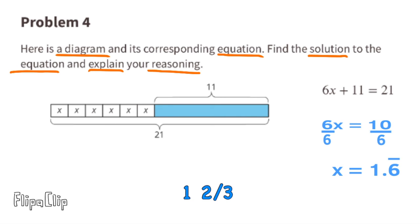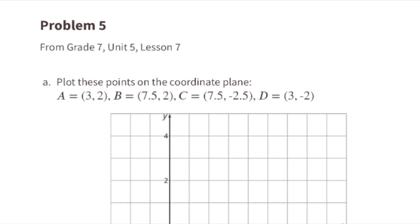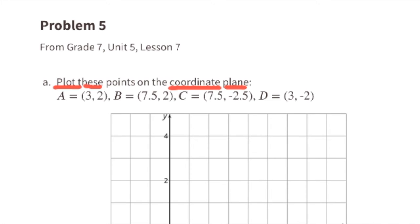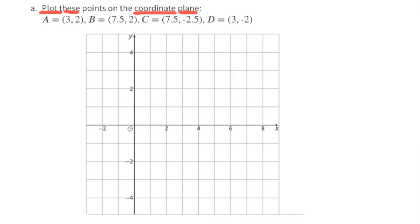Problem number 5 from 7th grade Unit 5 Lesson 7: plot these points on the coordinate plane. To plot points, always start at the origin, where the x-axis intersects the y-axis. Point A has coordinates (3, 2): move right 3 units along the x-axis, then up 2 units vertically. Point B has coordinates (7.5, 2): move right 7.5 units, then up 2 units vertically.